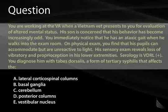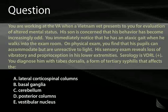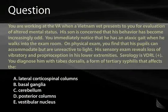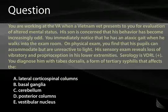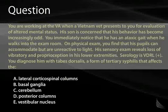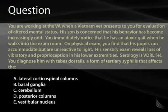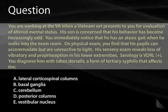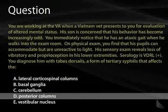Case question: a Vietnam vet presents with altered mental status and ataxic gait. On exam, his pupils accommodate but do not react to light (Argyll Robertson pupils), and sensory exam reveals loss of vibratory sensation and proprioception in his lower extremities. Serology is positive for VDRL. He is diagnosed with tabes dorsalis, a form of tertiary syphilis. Even from a neurology perspective, the ataxic gait and loss of vibration and proprioception point to posterior column disease.